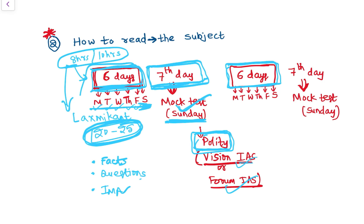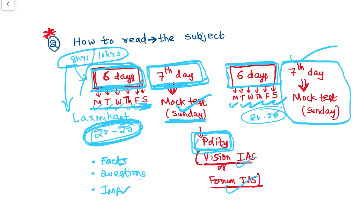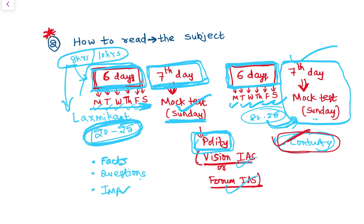After the test, pick up Lakshmikant again and repeat the process — cover the next 20 to 25 chapters. Try to complete Lakshmikant in these two weeks. On the seventh day again, give a test on what you read in those six days. This gives you continuity in the subject. For example, the chapter on Parliament is related to State Legislature, and Union Executive is related to State Executive, so you develop continuity and understand the subject in a holistic manner.